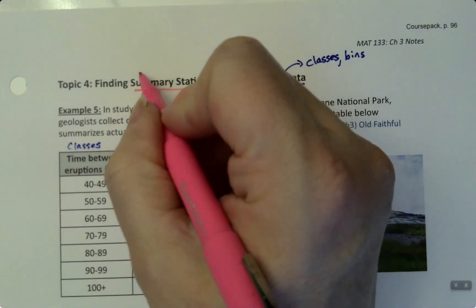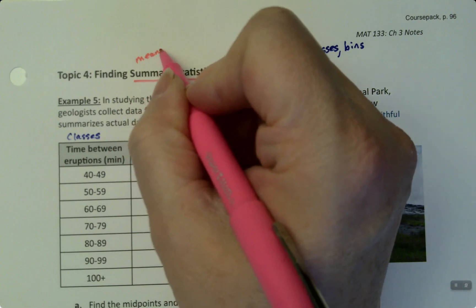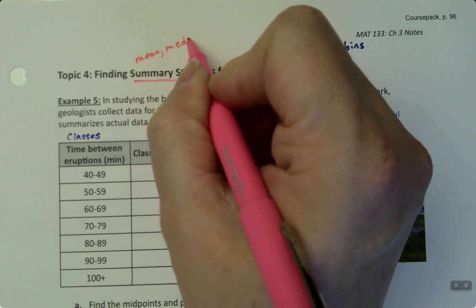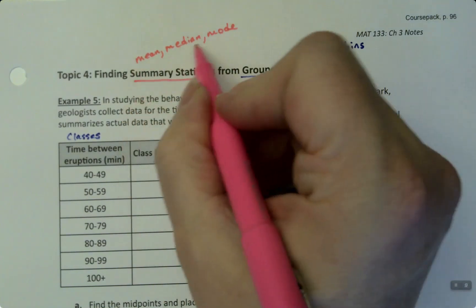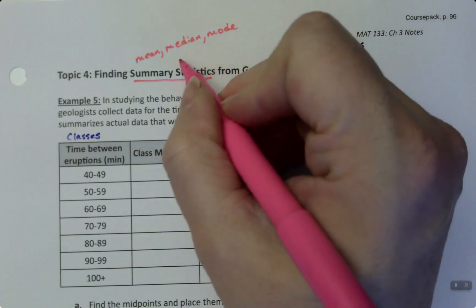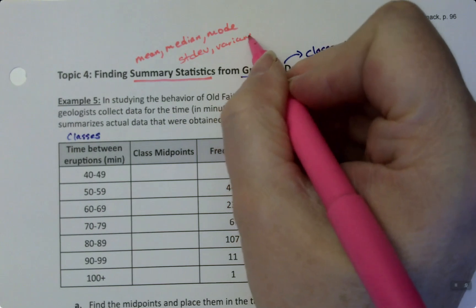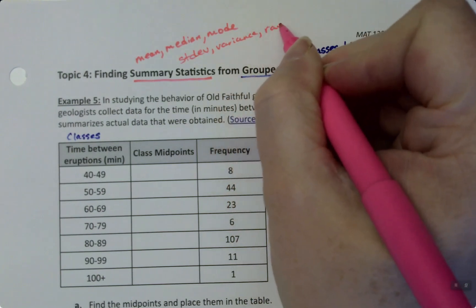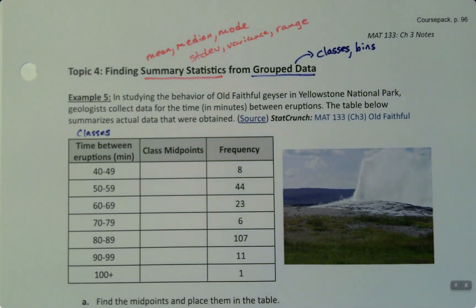Now, summary statistics—we've learned six of them so far, and we're going to find five of them in this problem. We've learned the mean, the median, the mode—those are measures of center. And then we've also learned standard deviation, variance, and range, which are all measures of spread. There are more of them coming, wait till the next section. But these are the ones we've learned so far.